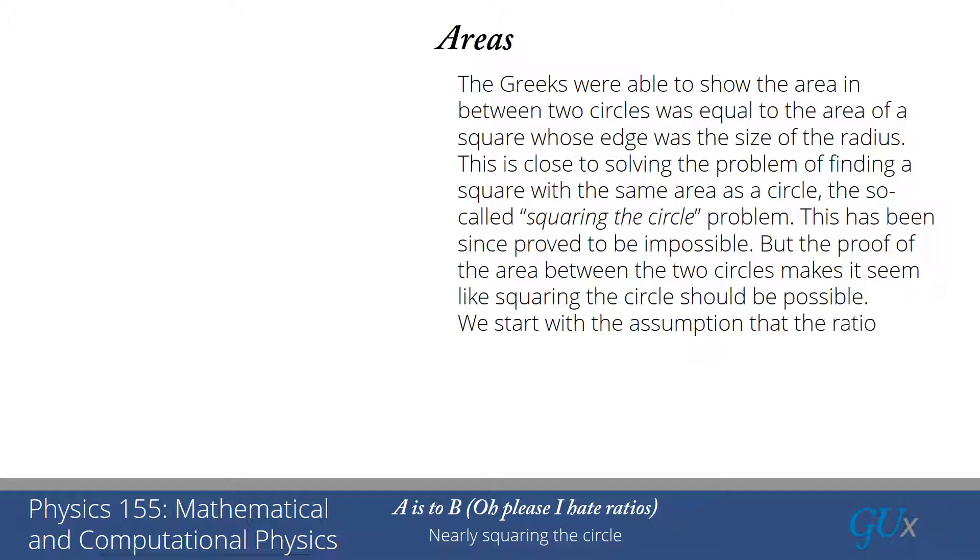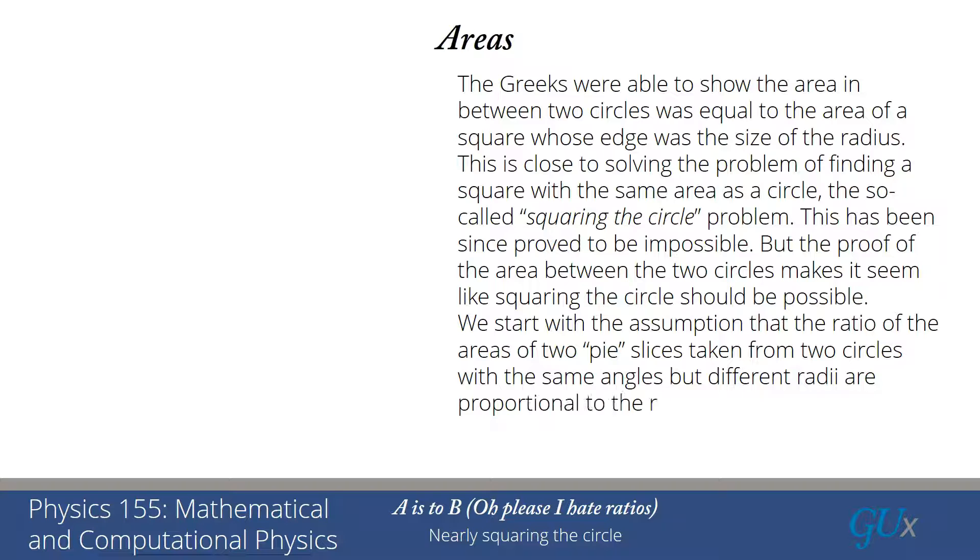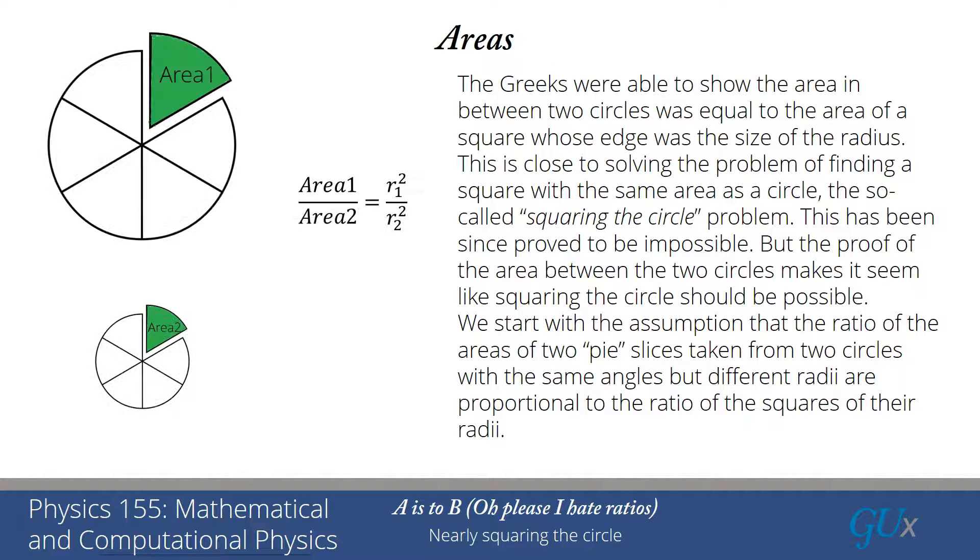What we're going to do is we're going to start with the assumption that the ratio of the areas of two pi slices from two different circles with the same angles but different radii are proportional to the ratio of the squares of their radii. And that's illustrated for you graphically here.